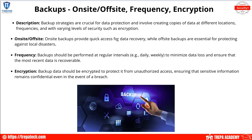Imagine we have a ransomware attack — that on-site backup works really well, letting us restore to before the infection. But if we have a natural disaster and all power goes out from an earthquake or hurricane, the on-site backup is useless. That's the purpose of off-site backups and geographic dispersion.